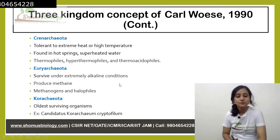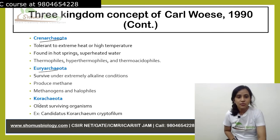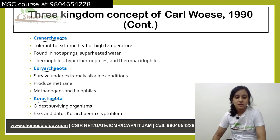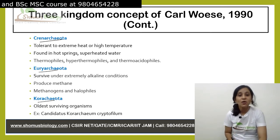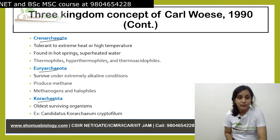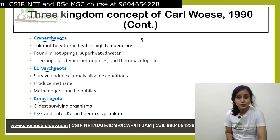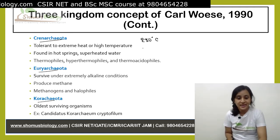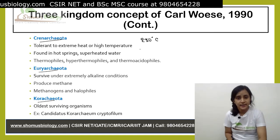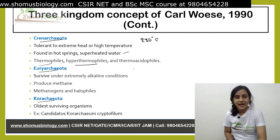Archaea has three phyla: Crenarchaeota, Euryarchaeota, and Korarchaeota. Crenarchaeota are tolerant to extreme heat or high temperature. They have special proteins that help them to function at temperatures as high as 230 degrees Celsius. They can be found in hot springs and regions with superheated water. These include thermophiles, hyperthermophiles, and thermoacidophiles.